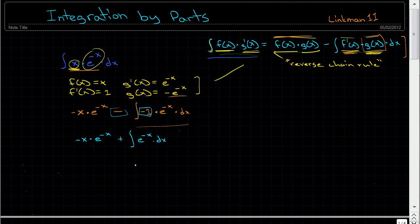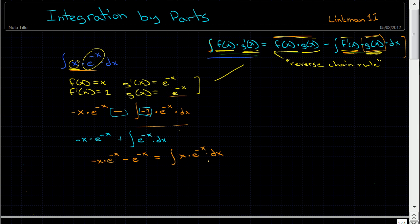We factor out the negative one, and since we're subtracting a negative it becomes a plus, giving us plus the integral of e to the negative x dx. We've turned x times e to the negative x into just e to the negative x — much simpler. The anti-derivative of e to the negative x is negative e to the negative x. So the result is negative x times e to the negative x minus e to the negative x, which equals the integral of x times e to the negative x dx. This is essentially the reverse chain rule from differentiation.